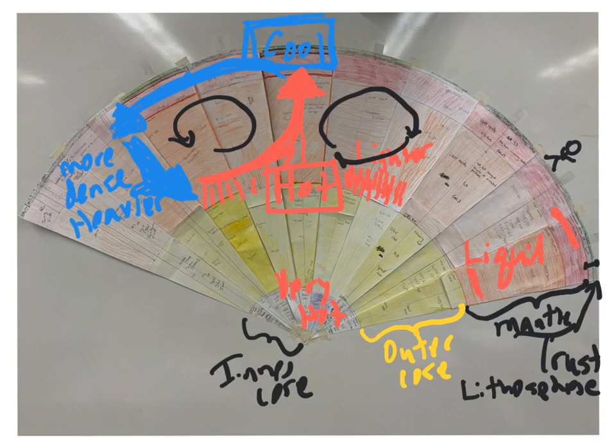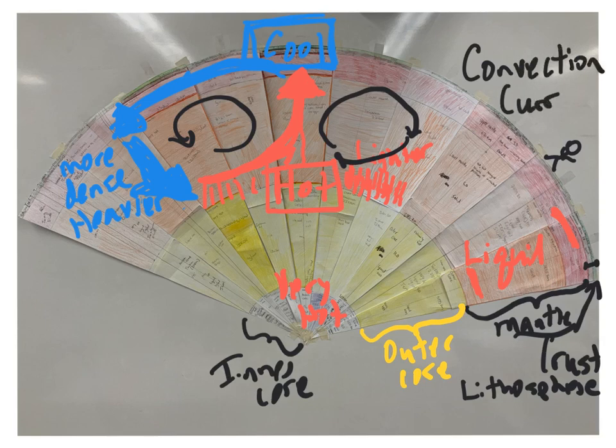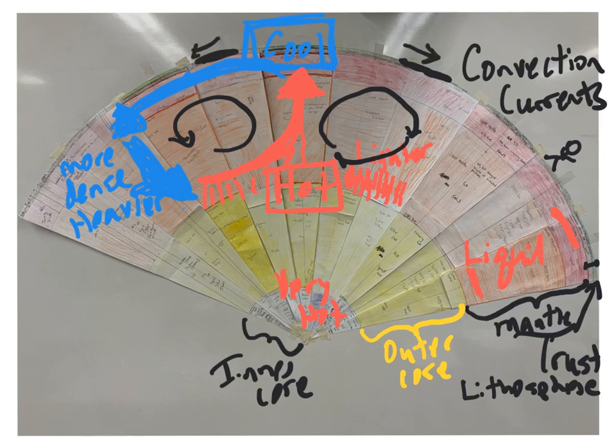And of course on the other side, the same thing's happening over here. So we're getting these convection currents on both sides, and what happens is that movement - those little black circles that you see are called convection currents - and they drive what's happening up here with the plates.